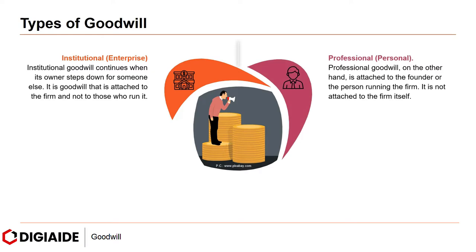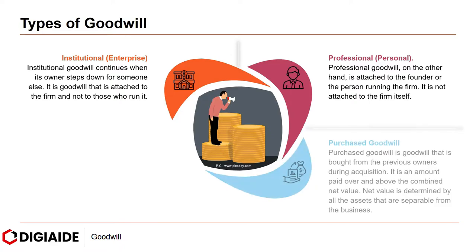Next, professional or personal goodwill. Professional goodwill is attached to the founder or the person running the firm — it is not attached to the firm itself. Next, purchased goodwill. Purchased goodwill is goodwill that is bought from the previous owners during acquisition. It is an amount paid over and above the combined net value, determined by all the assets that are separable from the business.